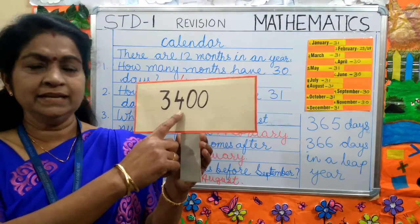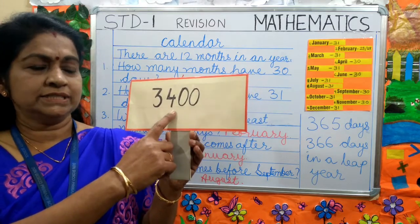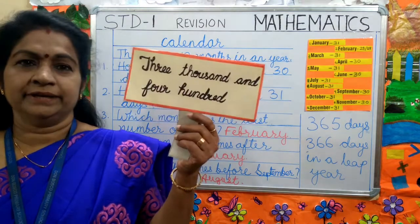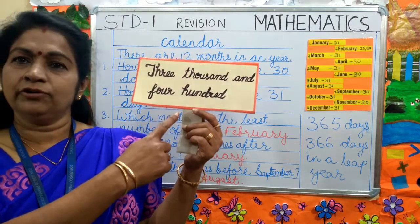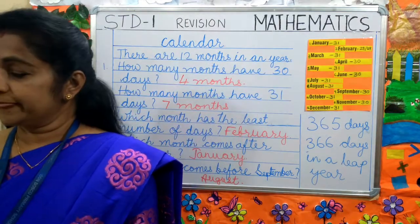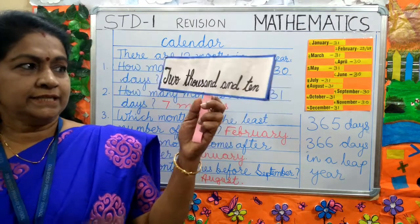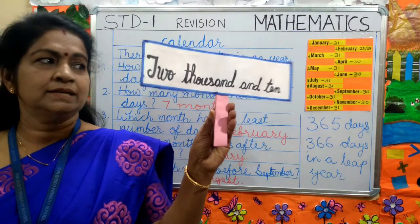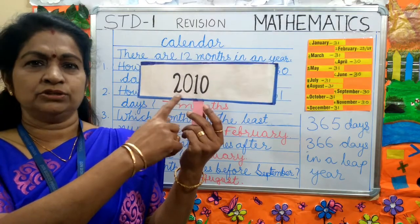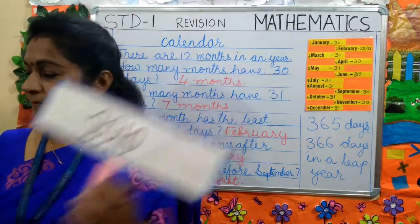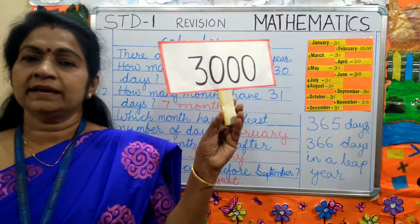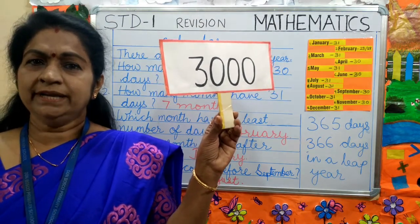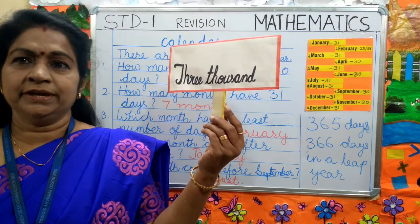Now children, can you tell me this number written in figures? What number is this? 3,400. This number you have to write in words: three thousand four hundred. Again, this is 3,000 written in figures. You have to write in words: three thousand.